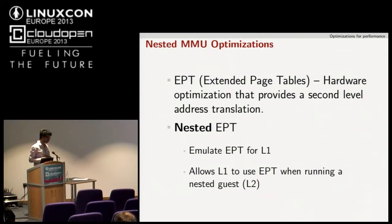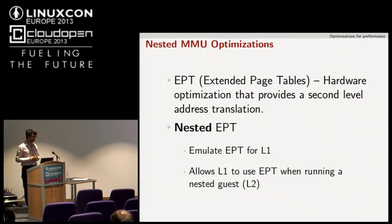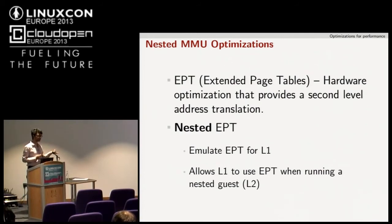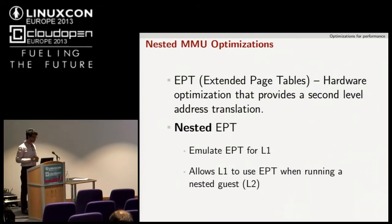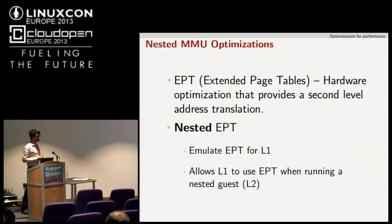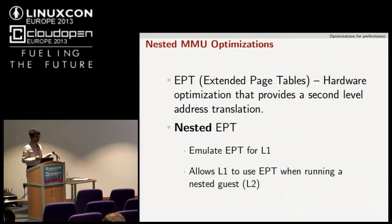Another optimization is at the memory level. EPT — Extended Page Tables — has been around since the Westmere architecture, about three or four years. EPT provides a second-level address translation in hardware. Before that, there was something called shadow page tables, which was extremely slow.